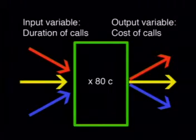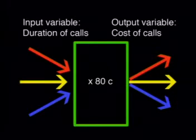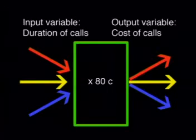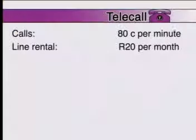We can represent this relationship using a flow diagram. Say the cost of each call is 80 cents per minute. The duration of the calls is the input variable and the cost is the output variable, because the cost depends on how long the calls are. The input variable is multiplied by 80 cents to give the output variable, namely the cost of the calls. There is also a fixed cost — in this case, renting a telephone line from Telecall — say 20 rand per month.